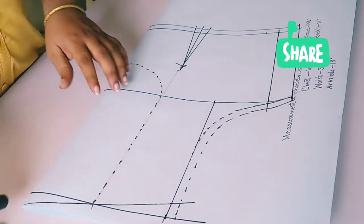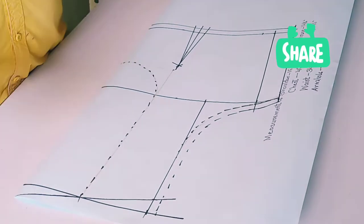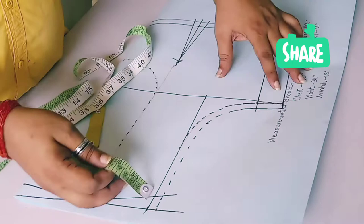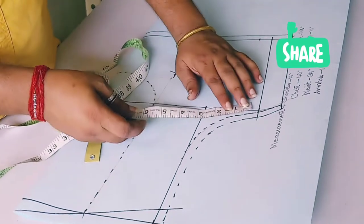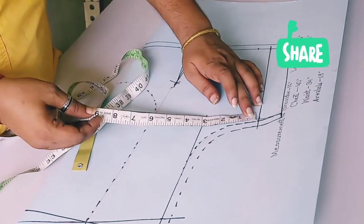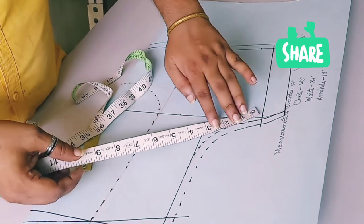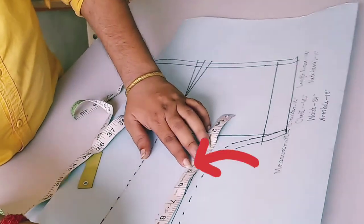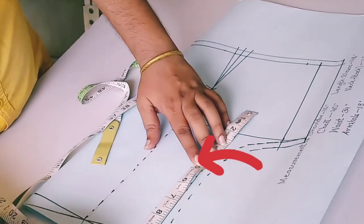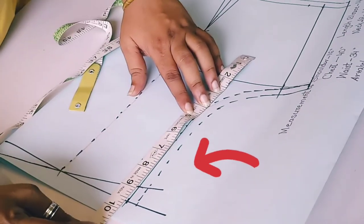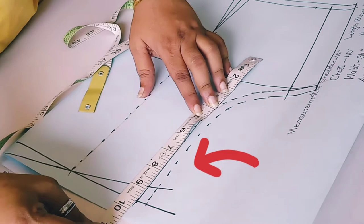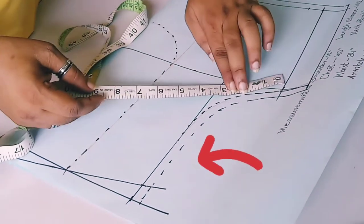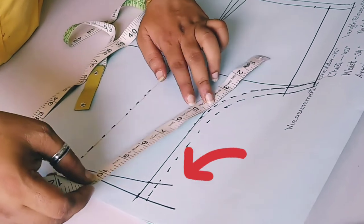Now we will check whatever formula we have given, it is correct or not. Our armhole is 18, so we will check it. You can check this, your armhole is perfectly done. This way you have to check your armhole.